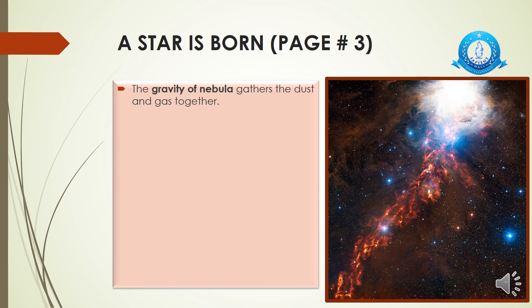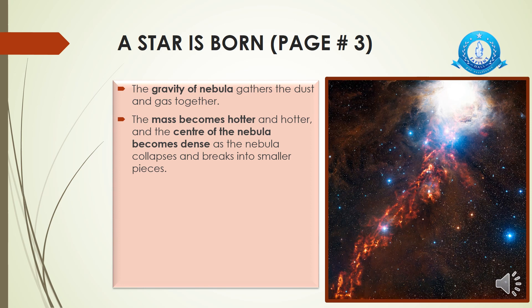All objects in the universe have their own gravity — you know gravity is the force that pulls everything toward its center. Nebula also has gravity, and because of that gravity it collects dust and gas together. Nebula is already made up of dust and gas along with cosmic rays. When it gathers everything, the whole mass of the nebula starts to heat up — it becomes hotter and hotter. The center of the nebula becomes thick and dense as the nebula breaks into smaller pieces, with everything falling into the center and the temperature rising.